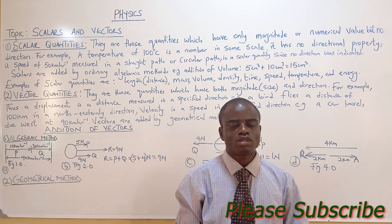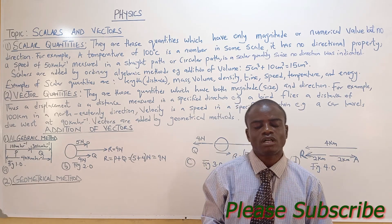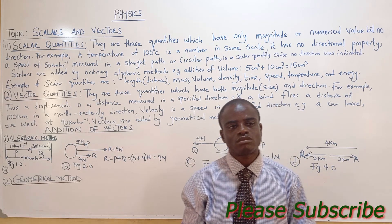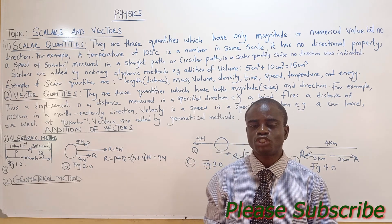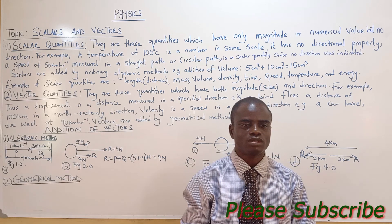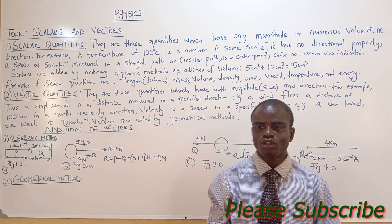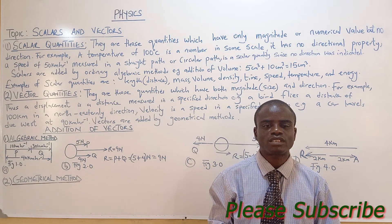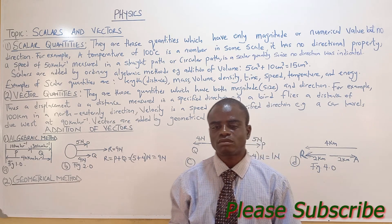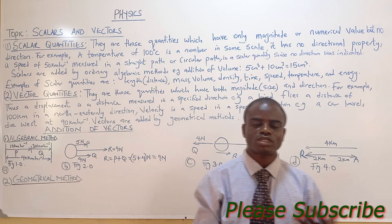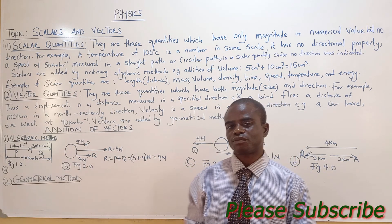Let's look at the method of solving scalars. Scalars are solved by the algebraic method. For example, when you want to add volumes together, just go directly: 5 centimeter cubed plus 10 centimeter cubed gives you 15 centimeter cubed.